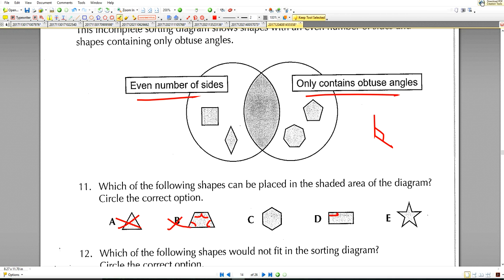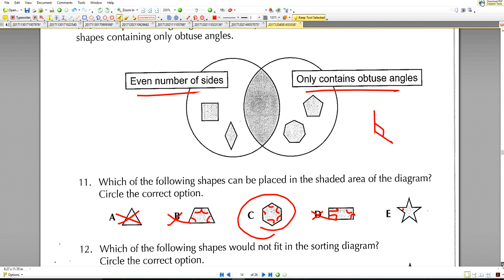Not that one—these are all acute angles. So it has to be C. You see, all obtuse angles here, and it has an even number of sides because it's a six-sided shape.